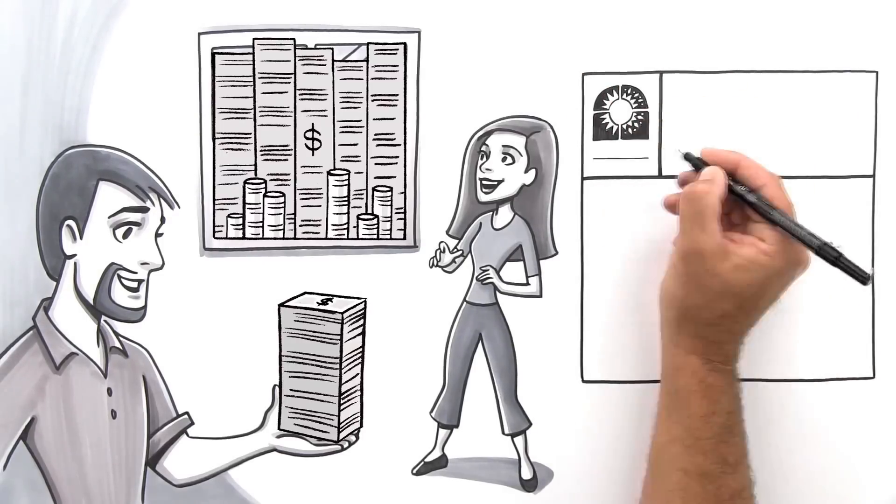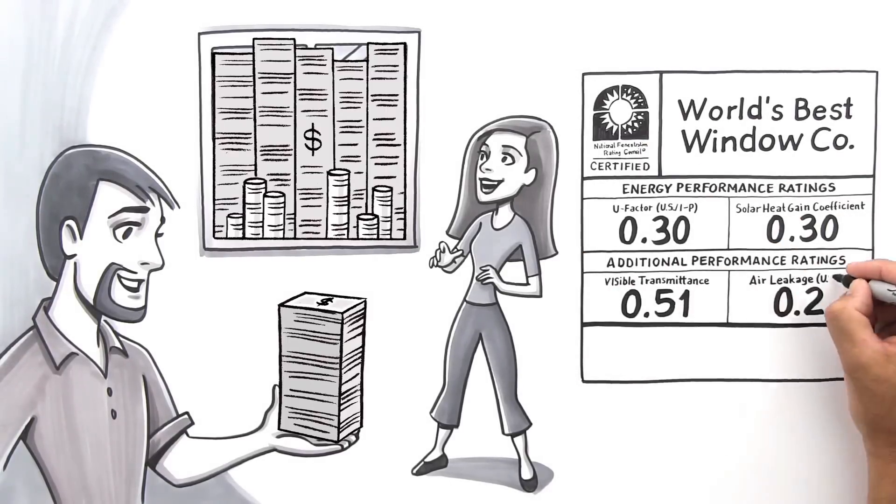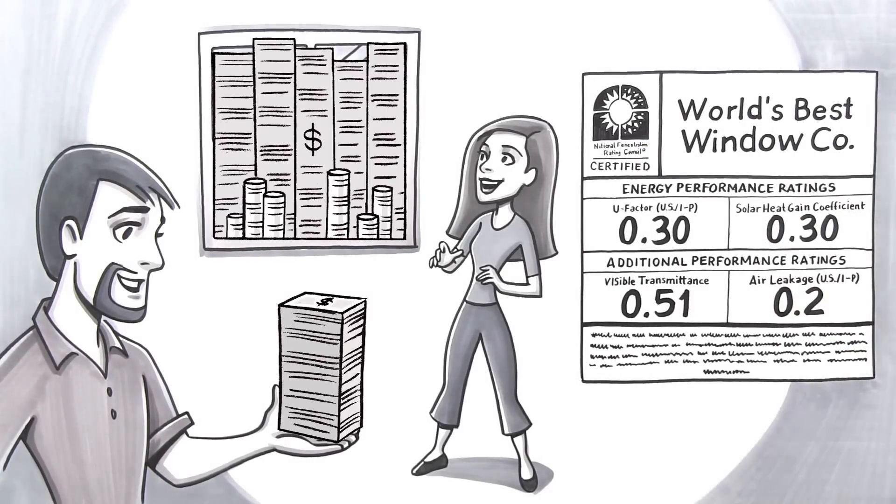Think of it like the miles per gallon you'd get on a car. You don't need to understand all the factors to know that the more miles per gallon, the higher the potential savings. The only difference with the NFRC label on a window is that generally lower numbers mean higher potential savings.